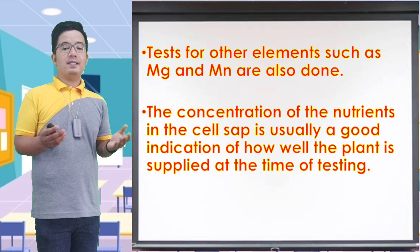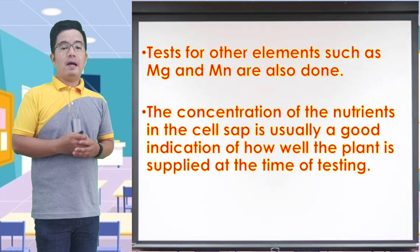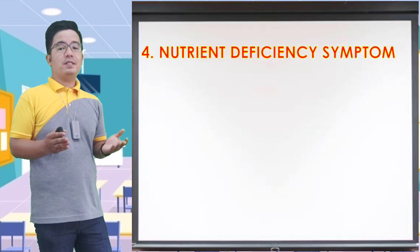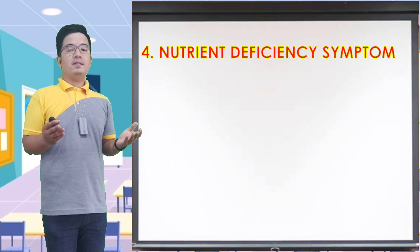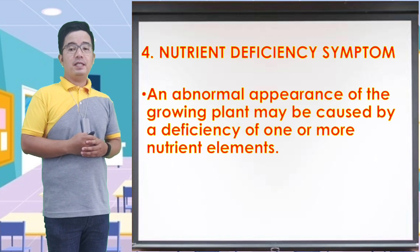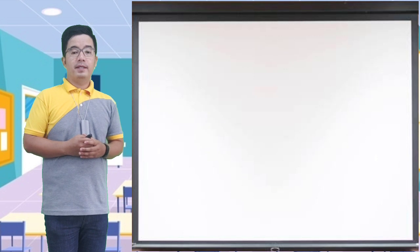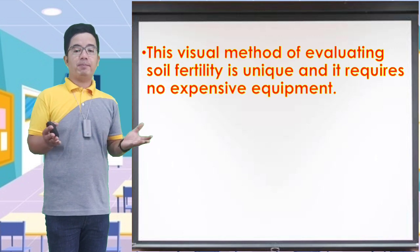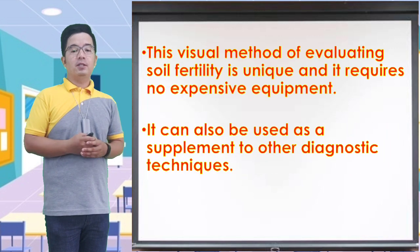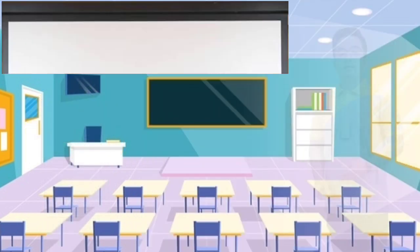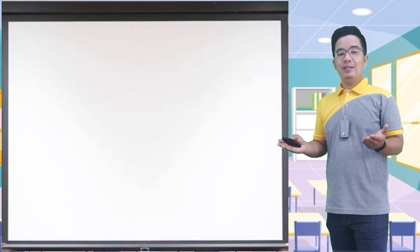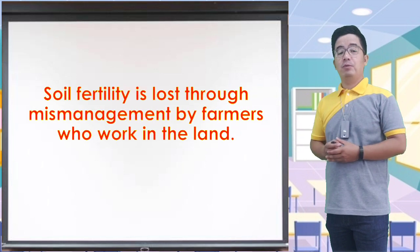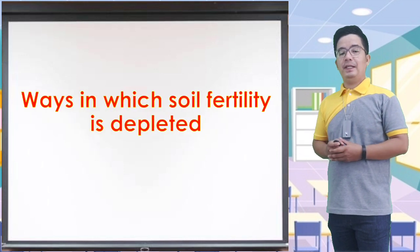The concentration of nutrients in the cell sap is usually a good indication of how well the plant is supplied at the time of testing. Number four, nutrient deficiency symptoms. An abnormal appearance of the growing plant may be caused by deficiency of one or more nutrient elements. This visual method of evaluating soil fertility is unique and requires no expensive equipment. It can also be used as a supplement to other diagnostic techniques.